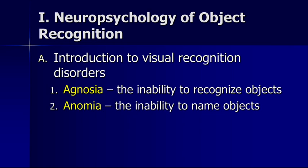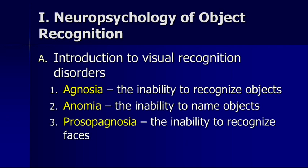An individual with anomia can look at an object and tell you something about it but can't give you its name. For example, if they were looking at a set of keys, they could say 'I can't remember what they're called, but you might use them to unlock your door or to start your car.' This indicates that while they recognize what the object is, they simply cannot find the name. Anomia itself simply means a lack of nouns — loss of nouns.